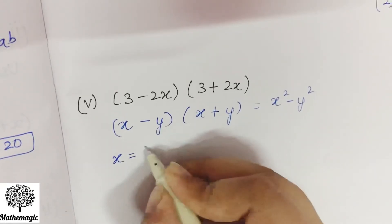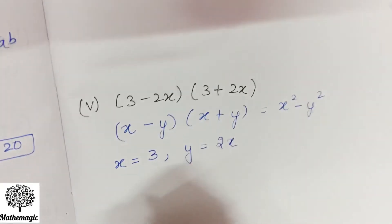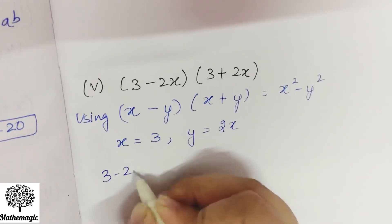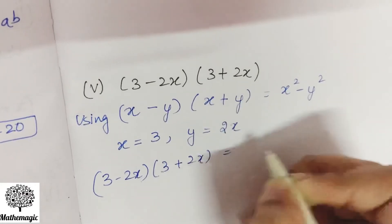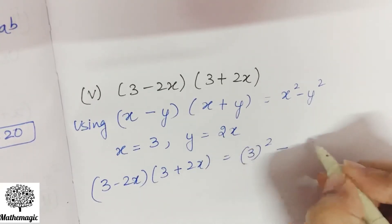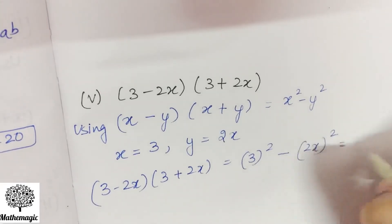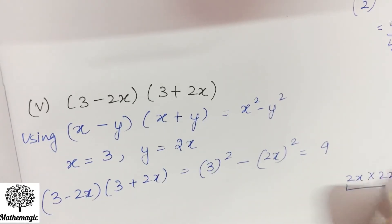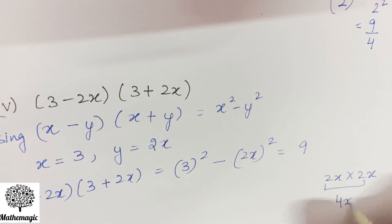Here x becomes 3 and y becomes 2x. So 3 minus 2x into 3 plus 2x is equal to x square minus y square: 3 square minus 2x whole square. 3 square is 9, and 2x whole square is 2x into 2x. 2 into 2 is 4, and x into x — using law of exponent — x ki power 2. So the answer is 9 minus 4x squared.